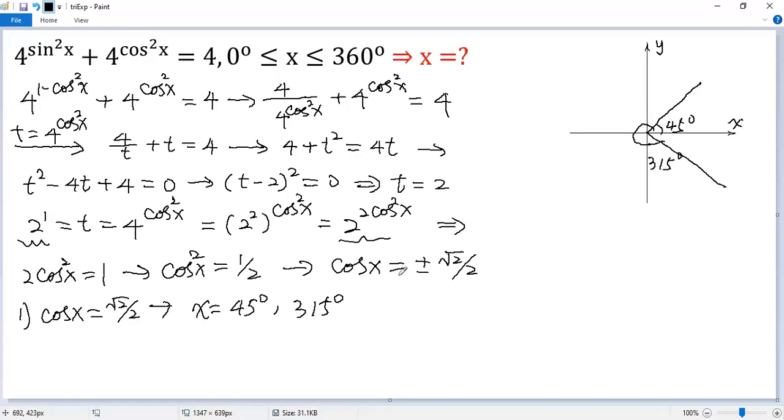Then cos x equals negative square root of 2 over 2. So we also have 2 angles. One is 90 plus 45, which is 135. So the angle is 135, so x equals 135 degrees.